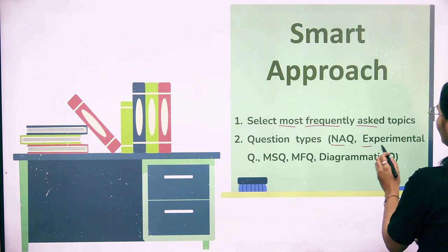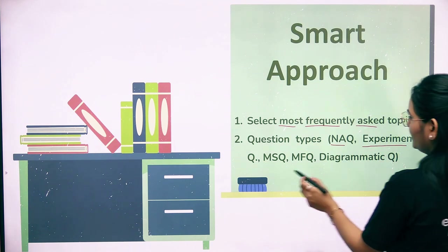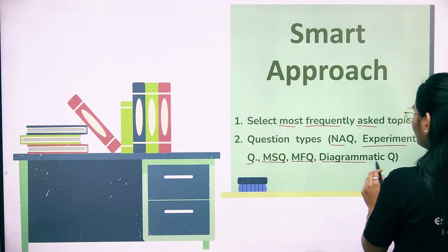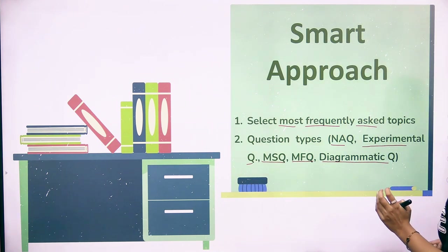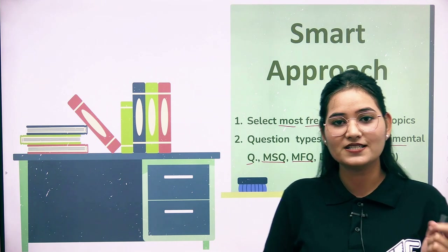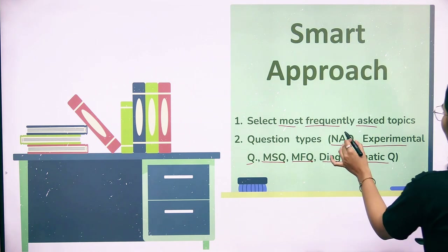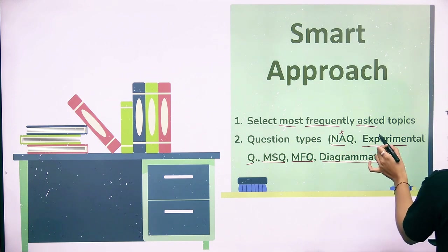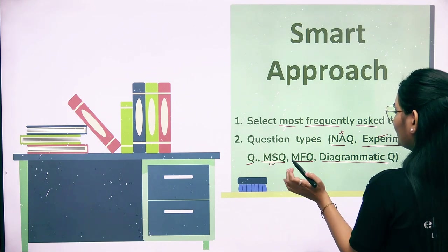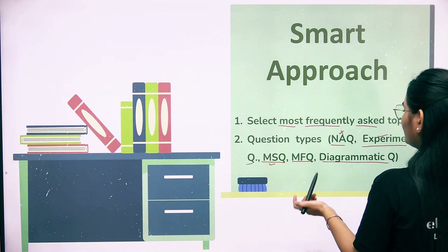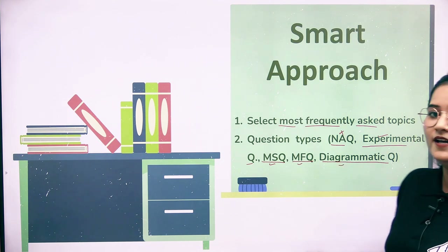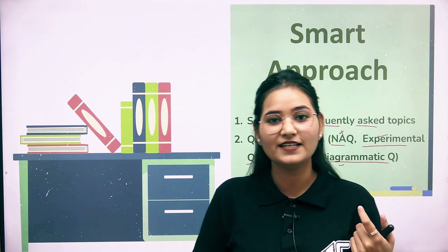The types of questions asked include: numerical answer type, experimental questions, multiple statement questions, match the following questions, and diagrammatic questions. For Unit 6 specifically, numerical answer type questions are generally not asked. Most commonly, experimental questions, multiple statement questions, match the following, and diagrammatic questions are asked.